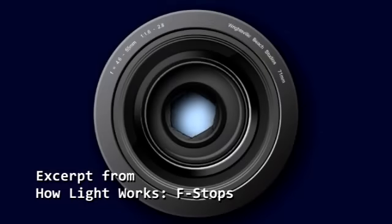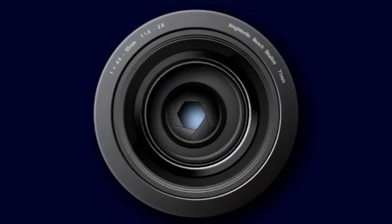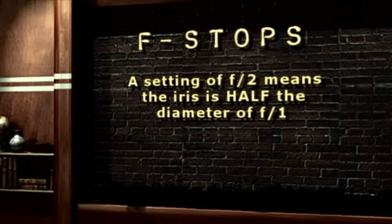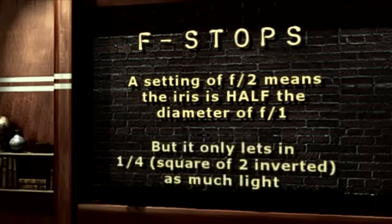Because when you cut the iris in half, it's actually only allowing in one-fourth as much light — the same reason as the inverse square rule. So if you want to cut the iris down by one stop, you want to make it 40% smaller.